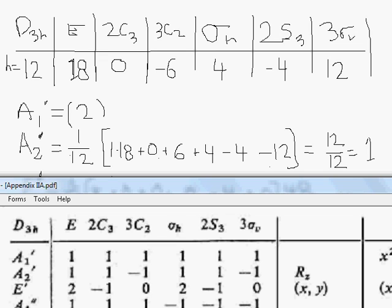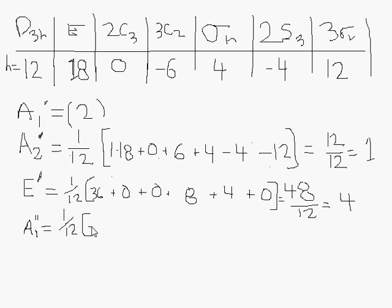Okay, A one prime. One one one, negative one, negative one, negative one. That's easy enough. So we have positive eighteen, zero, plus negative six. And then now it's all negative ones, so we're going to have minus four here, positive four here, minus twelve here. And that's going to equal zero. So for that whole term, it's zero.